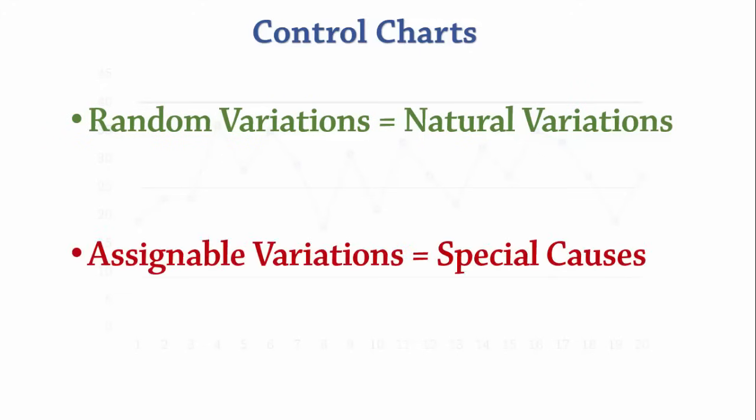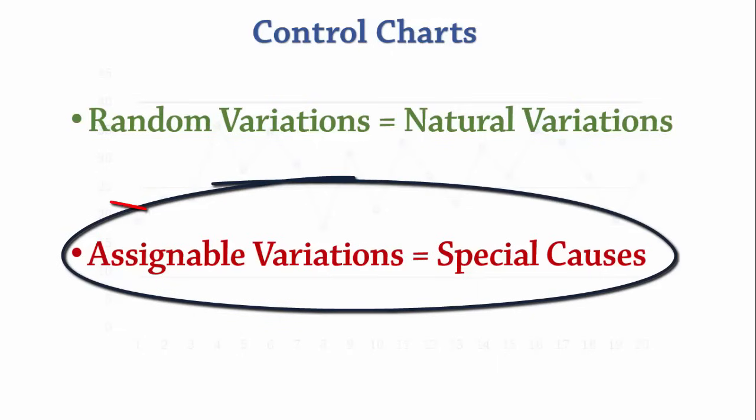Assignable variations, on the other hand, are special causes of variation. So the objective of statistical process control is to identify and eliminate these external causes of variation.